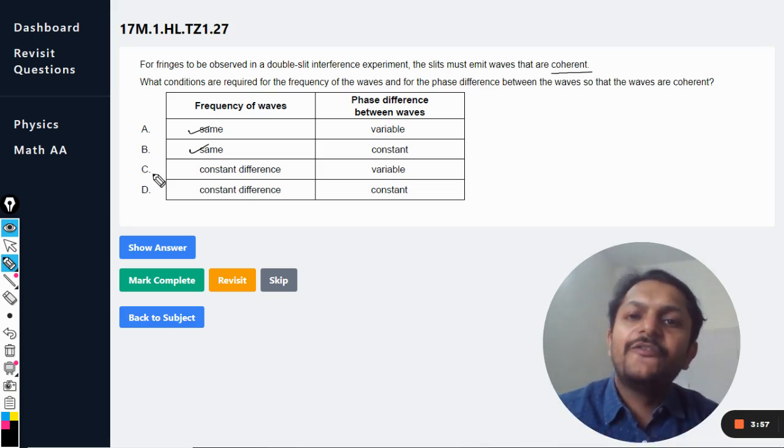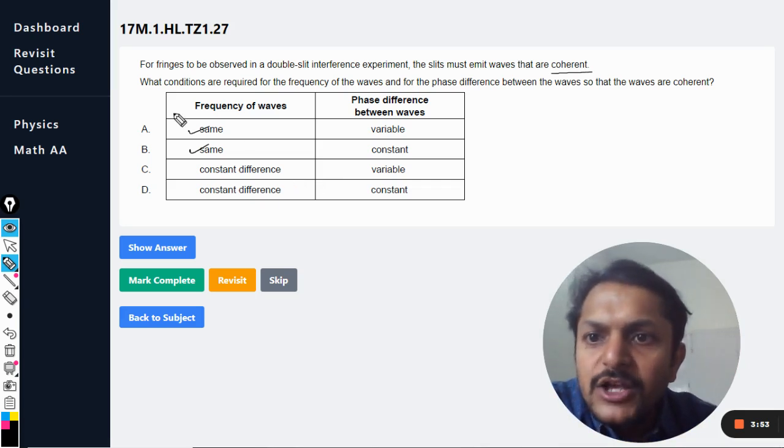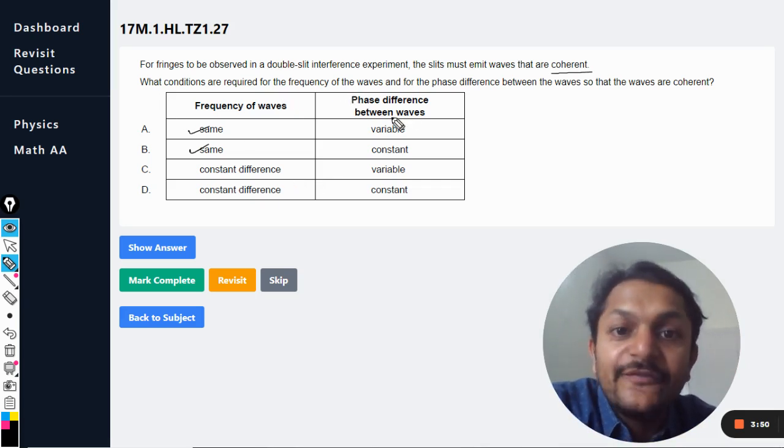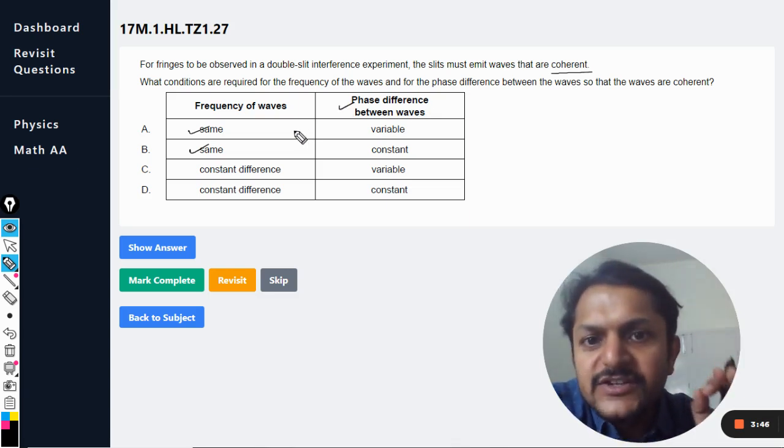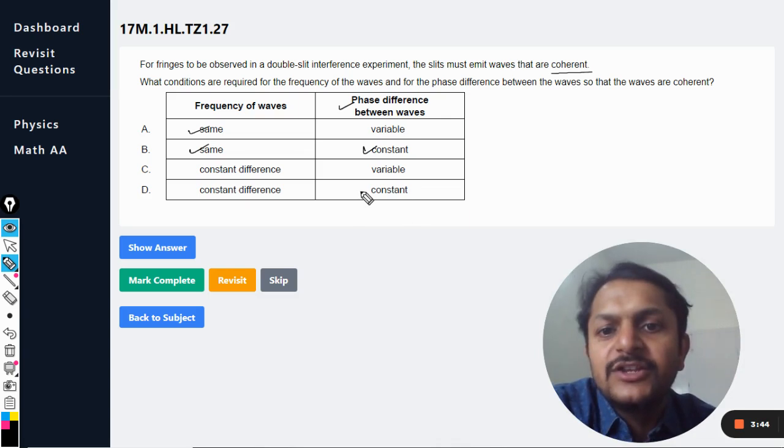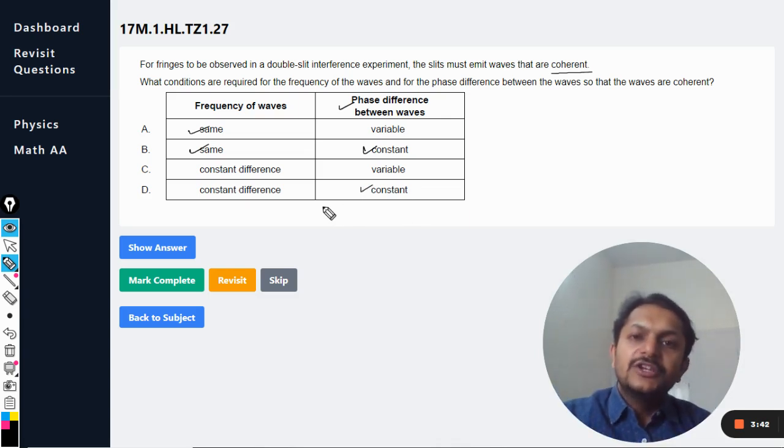That is why we are always using monochromatic light for both slits. So what conditions are required for the frequency and the phase difference? This is the second condition which is for the phase difference: it should be constant. The phase difference with which the waves have started should remain constant.